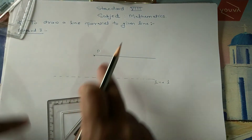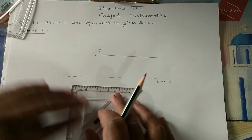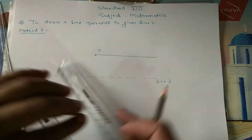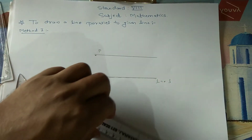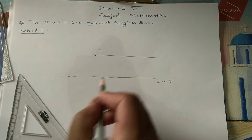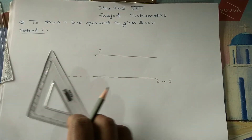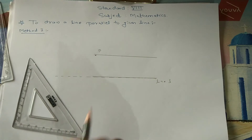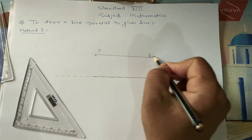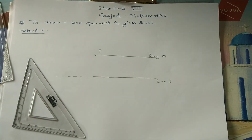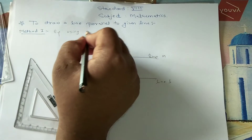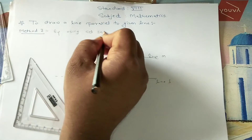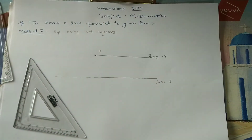If you observe, this line is parallel to the given line. I make this line also highlighted. If you observe, these two lines are parallel to each other. So, with the help of set squares, we can draw a parallel line to the given line. Suppose this is line M. So, these two lines are parallel to each other. This is method one — by using set squares.